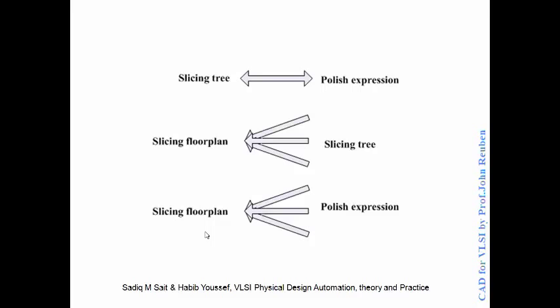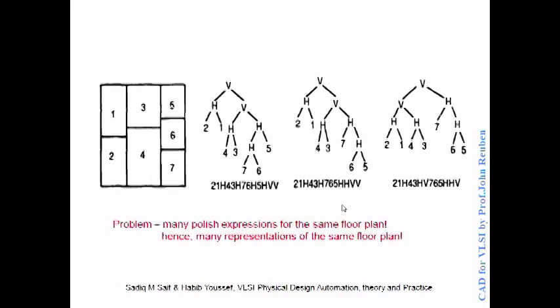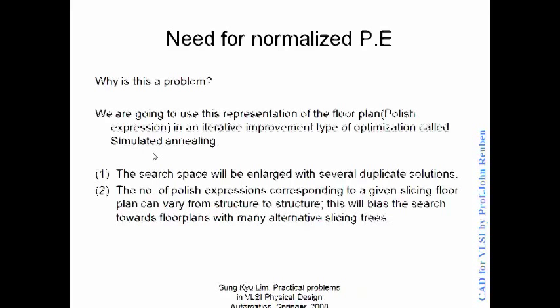This is a complicated problem because we want a concise representation of the floor plan so that we can optimize it. But for floor plans having multiple slicing trees, we end up having multiple polish expressions all representing the same floor plan. We have three slicing trees representing the same floor plan, and for every slicing tree you have a corresponding polish expression. This means we are going to have many representations for the same floor plan.